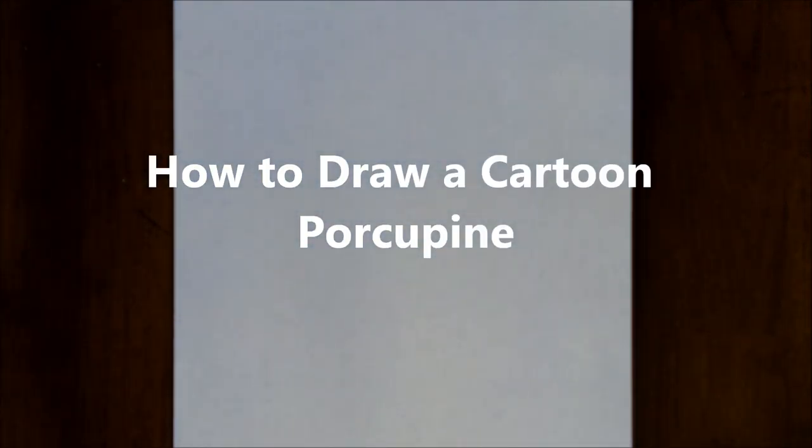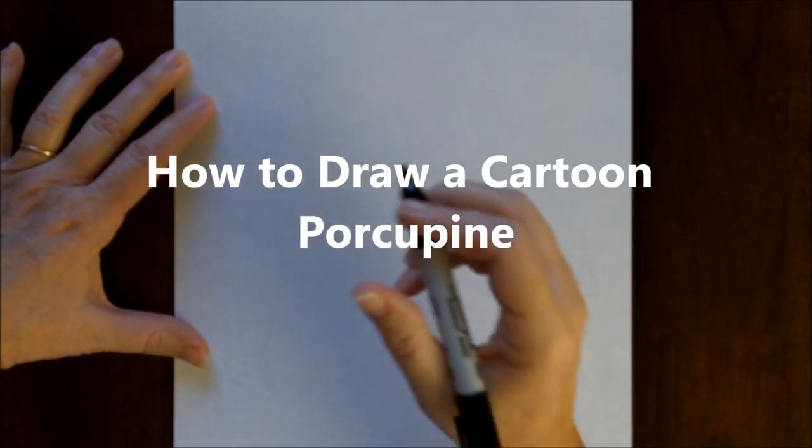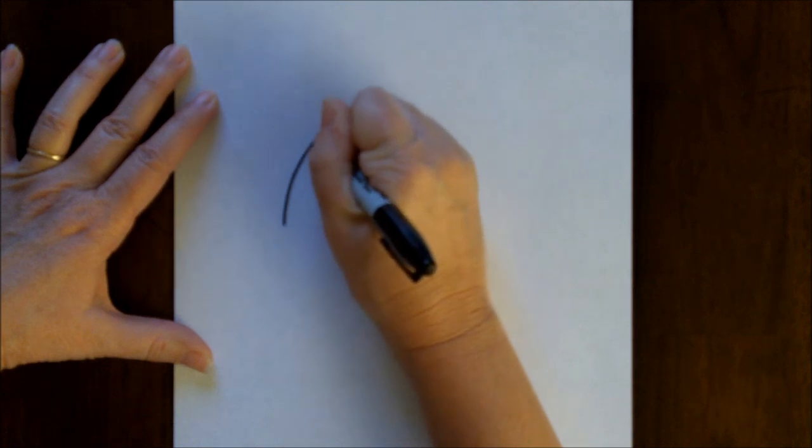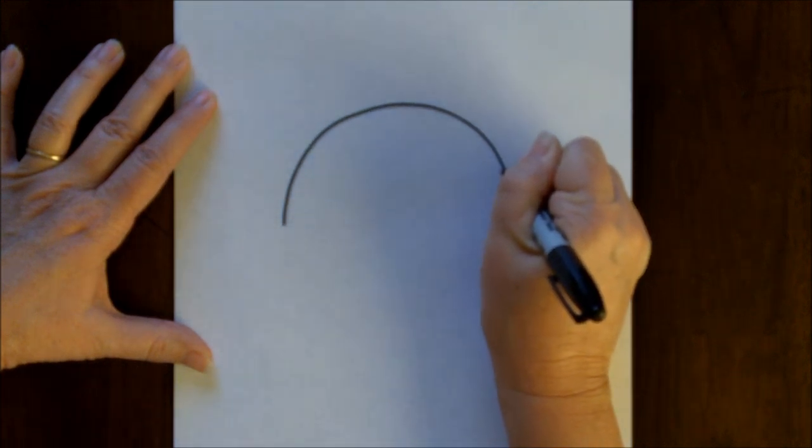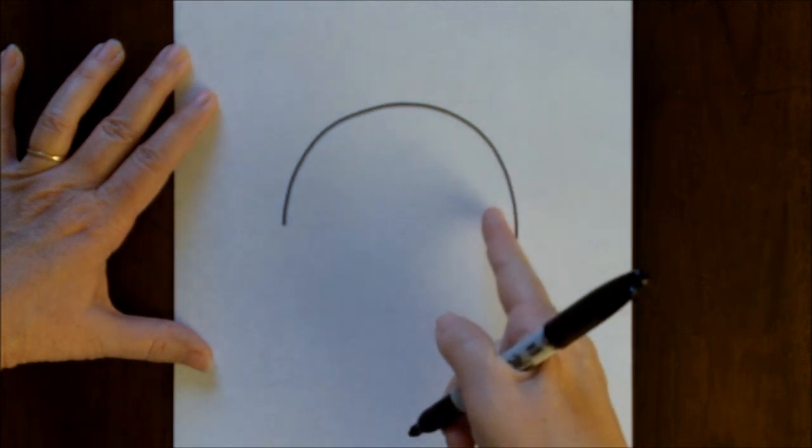Hi there, today I'd like to show you how to make a simple cartoon porcupine drawing, so let's get started. We're going to start out with an upside-down U, and the back part of this line is going to be longer than the front part.